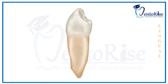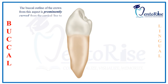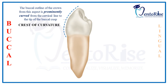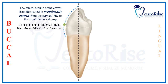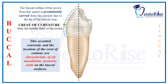After the cusps, let's talk about the buccal outline of the crown. The buccal outline from this aspect is prominently curved from the cervical line to the tip of the buccal cusp. The crest of curvature is placed near the middle third of the crown. This accentuated convexity and location of the crest of contour are characteristic of all the mandibular posterior teeth on the buccal surfaces.